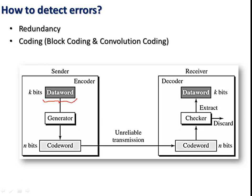In the encoding part, the original message is processed with a generator. Different techniques are used in the generator, and the result combined with the information is called a code word. This code word is transmitted. Due to external disturbances during transmission, the bit sequence may change, leading to errors. On the receiver side, a checker performs the same technique to remove the appended extra bits and extract the original information. If the data is received correctly, it is accepted; if corrupted, the receiver discards it.